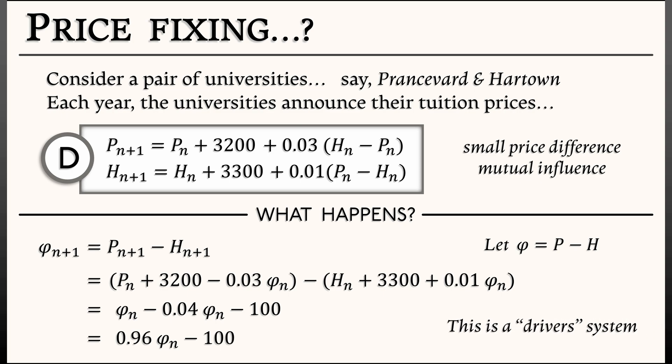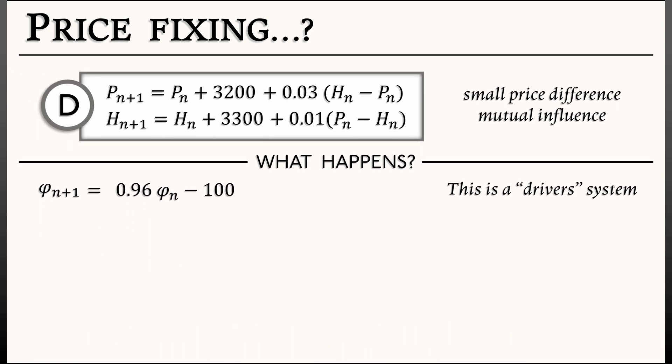That's phi n plus 1. And this is really a driver's system, where you have two different natural speeds for the drivers. So in the end, what we get is the one-dimensional dynamical system on the price difference. Phi n plus 1 equals 0.96 phi n minus 100.